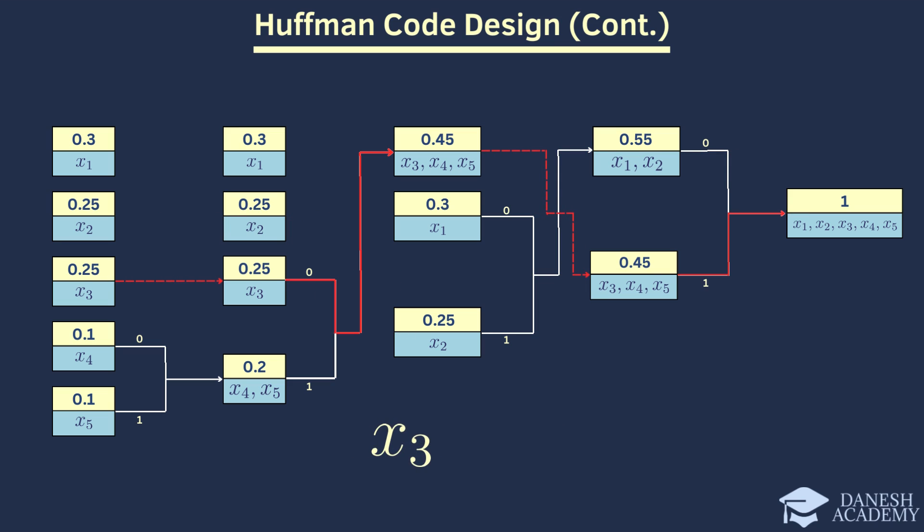For X4, we encounter 1,1,0 along the path, giving us the codeword 1,1,0. Likewise, X5 like X4 encounters codewords 1,1,1 along its path. Reading from right to left, we obtain the codeword 1,1,1. Finally, we notice that X4 and X5 have different codeword lengths compared to previous symbols. While the previous codewords had a length of 2, the codewords for these symbols have now increased to a length of 3.